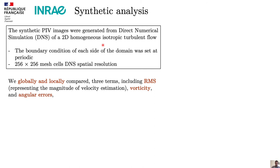For comparison we have two approaches — global comparison and local comparison — and we have three terms to be compared: RMS value representing the magnitude of the estimation error, vorticity estimation error, and angular error. So we have three terms to compare across both global and local view scenarios.